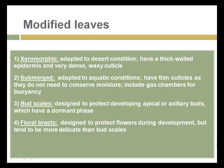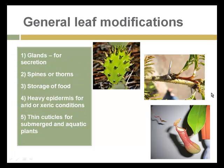Modified leaves include xeromorphic leaves adapted to desert conditions, with thick-walled epidermis and a very dense waxy cuticle, and may also be specialized for food storage as with some cacti. Submerged leaves, as found in kelp and seaweed, have very thin cuticles since they don't need to conserve moisture but have gas chambers inside to allow them to float and capture sunlight near the surface. Bud scales and floral bracts are also modified leaves, important for protecting developing buds.